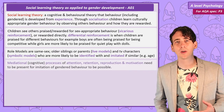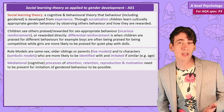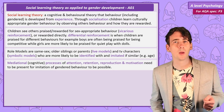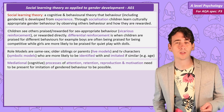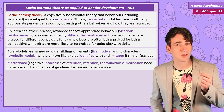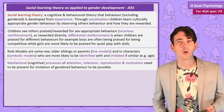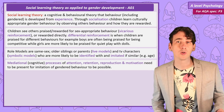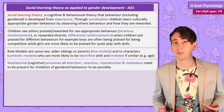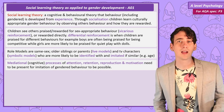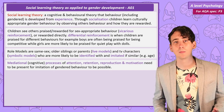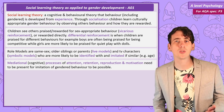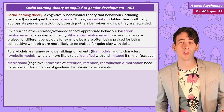As this is social learning theory, gendered behaviour is only going to be imitated if the individual performs the mediational processes: attention — they have to see the gendered behaviour happen; retention — they need to remember the gendered behaviour; reproduction — they have to think they're capable of performing it; and finally motivation — such as having seen someone else rewarded for that behaviour and hoping for the reward themselves.